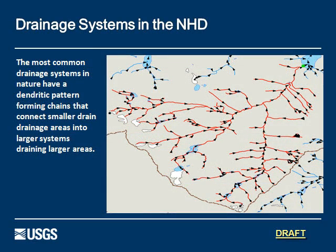This is a dendritic system that's being shown here. As you can see, it looks kind of like a chain of features going down into the one pour point, which is that green dot up there next to the lake in the Upper Northeast area. And this is the most common of the drainage systems.